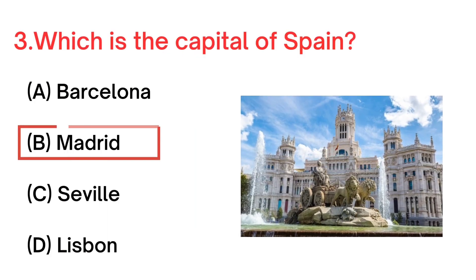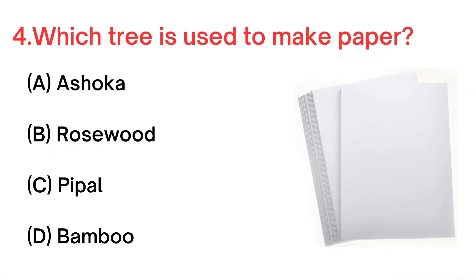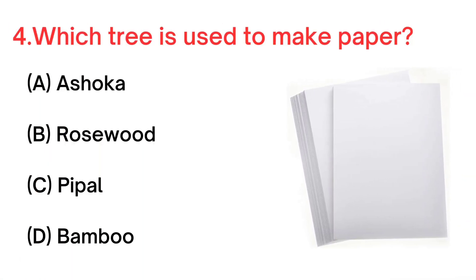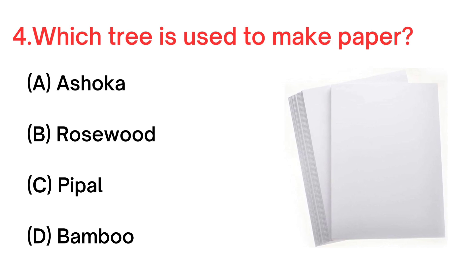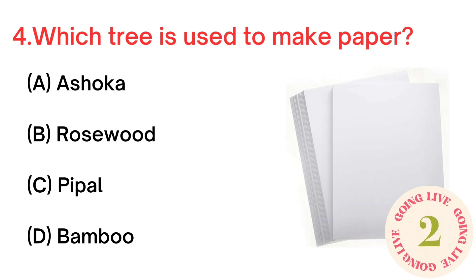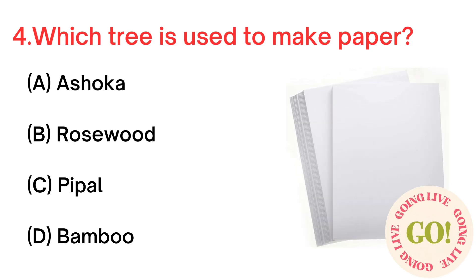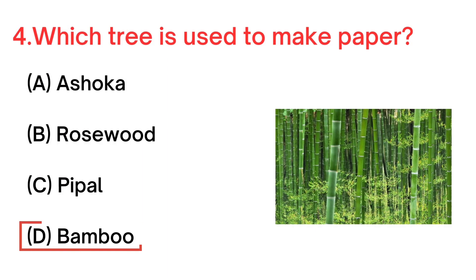Your next question. Which tree is used to make paper? A. Ashoka. B. Rosewood. C. People. D. Bamboo. Your answer is D. Bamboo.